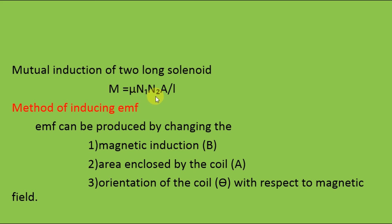Now we see the methods of inducing EMF — how to induce the electromagnetic force. EMF can be produced by changing: first, the magnetic induction B; second, the area enclosed by the coil; and third, the orientation of the coil, that is theta, with respect to the magnetic field. So we can produce EMF by changing B, A, or theta. That's all, thank you.